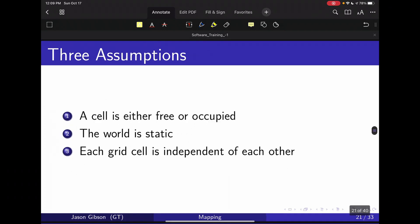So for occupancy grid mapping, we're going to use three assumptions. The first is that a cell is either free or occupied. It can't be some third option that we don't know about.